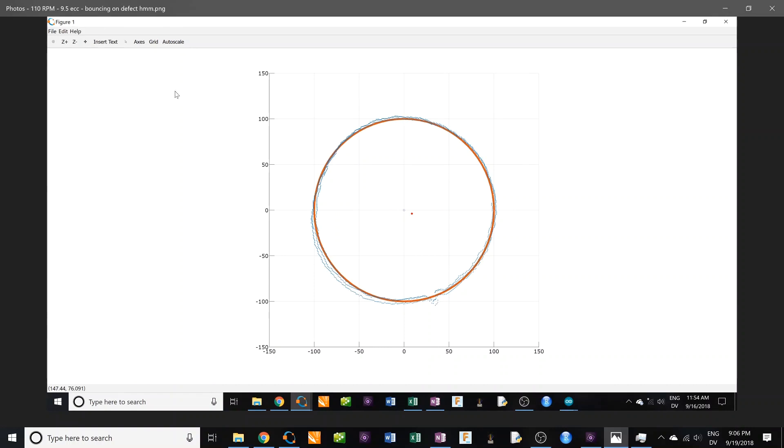Here we are at 110 RPM. We have almost the same eccentricity, and it looks quite a bit better. You can still see that defect where it was bouncing. But it's also interesting to see that it's kind of a little bit too big here. And over here, the red is just the average, the center. So that's about double the RPM of before.